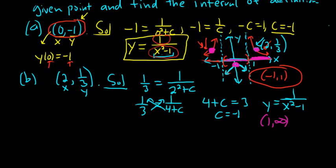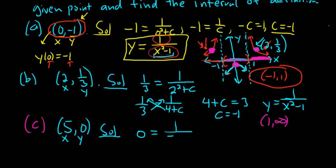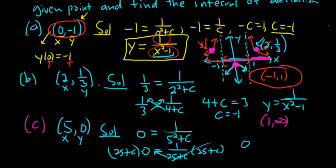Let's do one more, a really tricky one. What if we're told it passes through 5 comma 0? Then just like before, we do the same thing. This is our x, this is our y. So we get 0 equals 1 over 5 squared plus c. So 0 equals 1 over 25 plus c. Then multiply by 25 plus c. And then what happens is these cancel, so you get 0 equals 1.